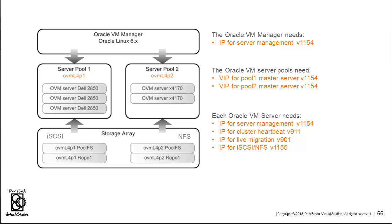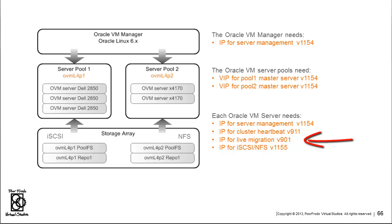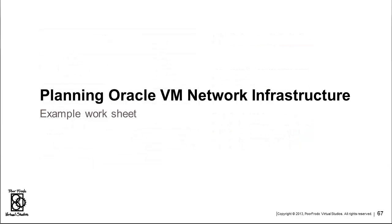Finally, you'll need IPs for the Oracle VM servers, DOM0. In our case, we'll need an IP for server management on VLAN 1154, one for the cluster heartbeat on VLAN 911, an IP and hostname for live migration on VLAN 901, and also for DOM0 an IP hostname for iSCSI NFS on VLAN 1155.